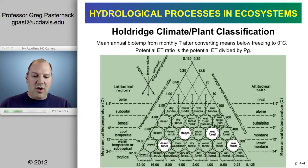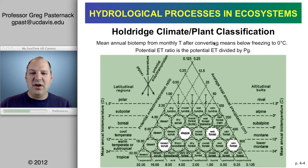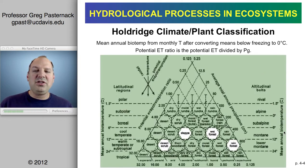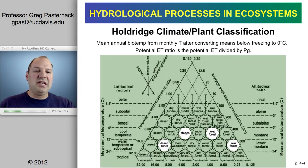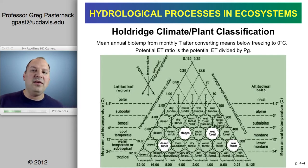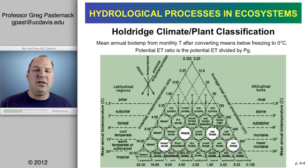Starting at the bottom and going up the triangle gives us the mean annual biotemperature. Biotemperature is the average temperature considering only days when it's not freezing — any day when it is freezing, the temperature is set to zero degrees Celsius. You average all the zeros along with temperatures above zero to get biotemperature. The idea is simply that plants aren't doing anything when it's below freezing, so those days shouldn't factor in.